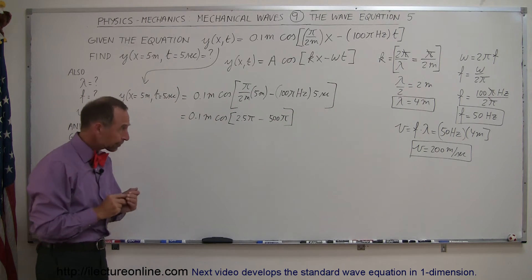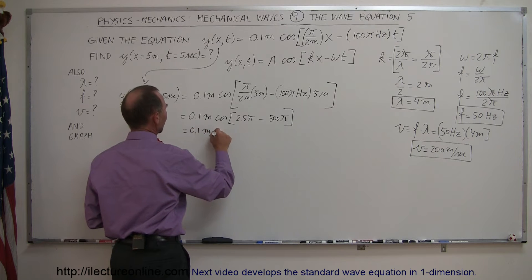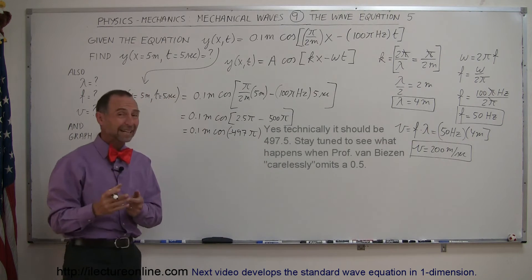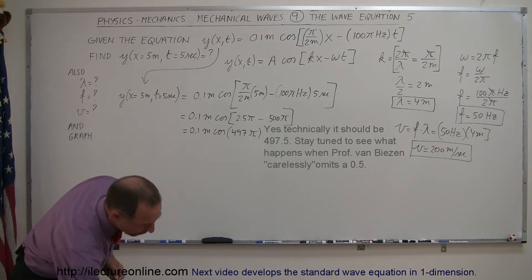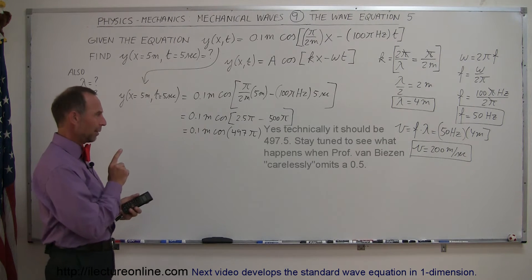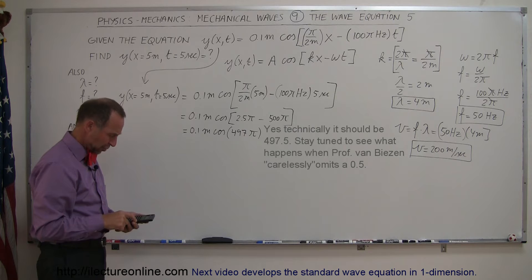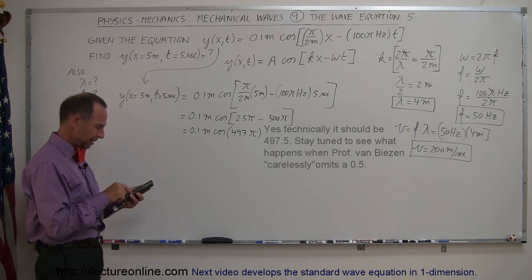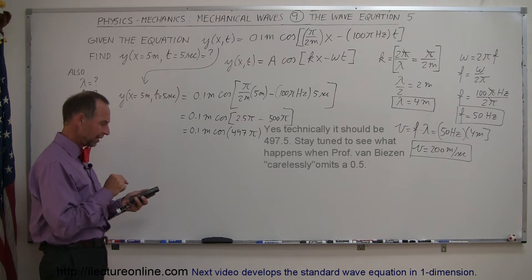At this point, we can go ahead and evaluate the cosine of this. I can simplify this: 0.1 meters times the cosine of 2.5π minus 500π, that is the cosine of 497.5π. Remember that the cosine of a negative angle is the same as the cosine of a positive angle. Notice the angle is expressed in radians, so we have to convert to radians. Mode 5. I'm in radian mode now. I plug in 497 times π, then take the cosine of that, which is minus 1.